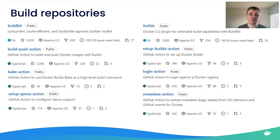First, we have Moby BuildKit Builder Engine — the heart of our modernized build story. It's a very scalable and performant builder engine with smart caching capabilities; this is the component that will actually run your builds. It's a community project, not only used by Docker Build, but also by many other projects like Earthly or Dagger.